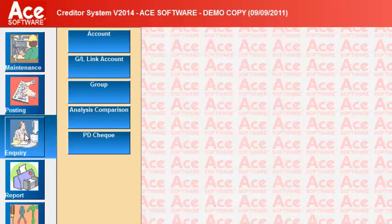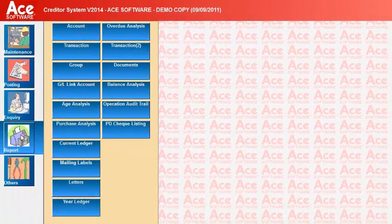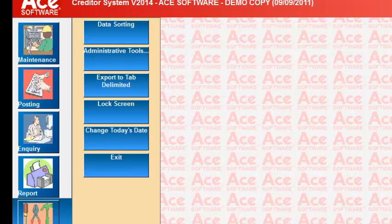We also have an Inquiry section where you can inquire on any particular supplier's account and how much is outstanding at any point in time. Then we have all the various Reports. The Other section is where we set up configuration for the ACE Creditors System, create additional users and their passwords, and control which parts of the program each user can access. The last button is Exit to leave the entire system.